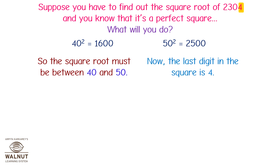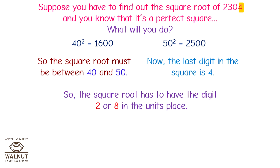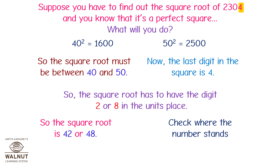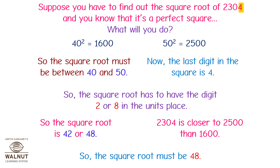Now the last digit in the square is 4, so the square root has to have the digit 2 or 8 in the units place. So the square root is 42 or 48. Check where the number stands — 2304 is closer to 2500 than 1600, so the square root must be 48.